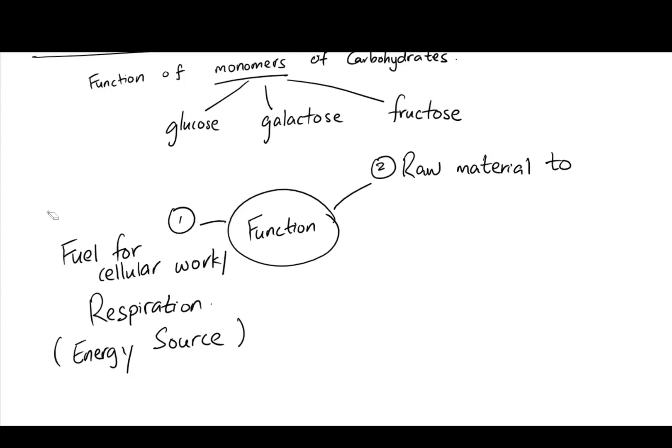The second one is that it can produce raw material to make other organic molecules. We know that monomers are really just made of carbon, hydrogen, and oxygen. We also know that it can act as like a building block for other polymers.